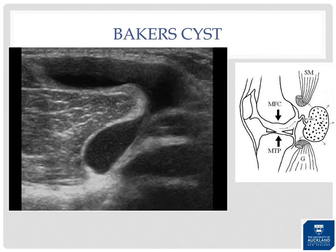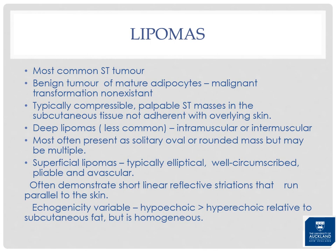Baker's cysts are fluid-filled distended synovial-lined bursae, comma-shaped with a characteristic neck arising between the medial head of gastrocnemius and the semimembranosus tendons via communication with the knee joint. They can cause swelling and pain in the lower leg, sometimes simulating DVT. The cyst may contain solid synovial tissue, and can be inflammatory with particulate material, septations, and loculations visible on ultrasound.